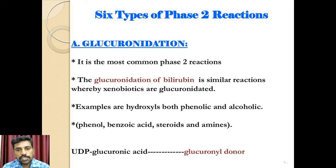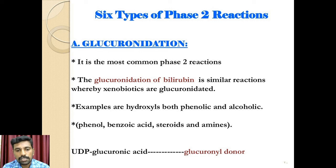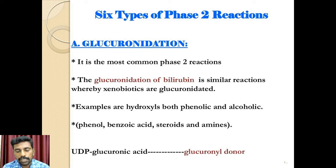Glucuronidation is a well-characterized Phase 2 reaction metabolic pathway that has high capacity and produces rapid drug metabolism and inactivation via polar glucuronidation metabolites. Examples include hydroxyls, both phenolic and alcoholic groups including phenol, benzoic acid, steroids and amines. Glucuronidation consists of transfer of the glucuronic acid component of uridine diphosphate glucuronic acid to a substrate by any of several UDP glucuronosyltransferase enzymes.